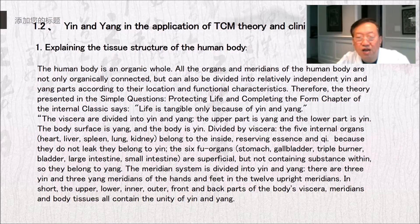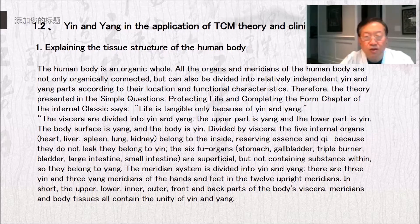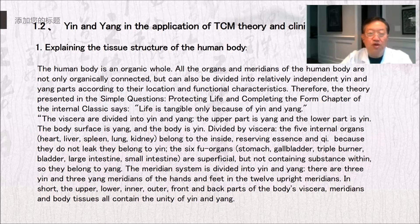Explaining the tissue structure of the human body: the human body is an organic whole. All the organs and meridians are not only organically connected, but can also be divided into relatively independent yin and yang parts according to their location and functional characteristics. As the Internal Classic states: 'Life is tangible only because of yin and yang. The viscera are divided into yin and yang. The upper part is yang and the lower part is yin. The body surface is yang and the body is yin.'